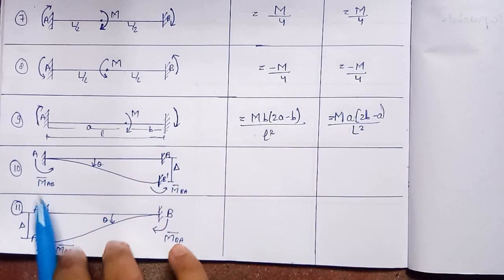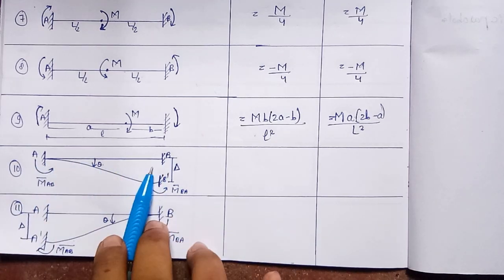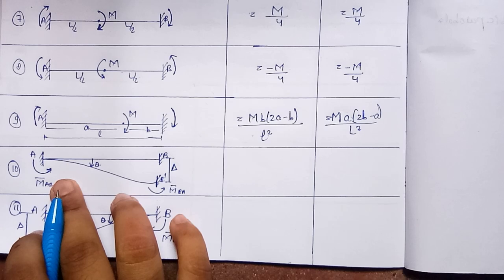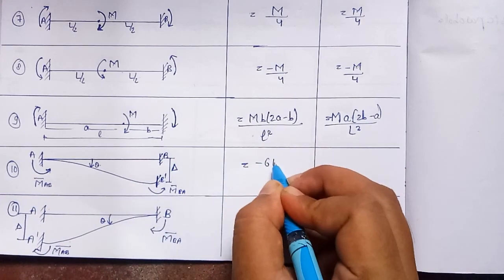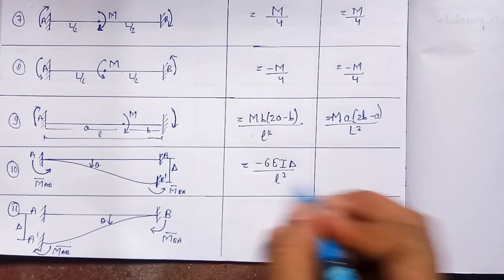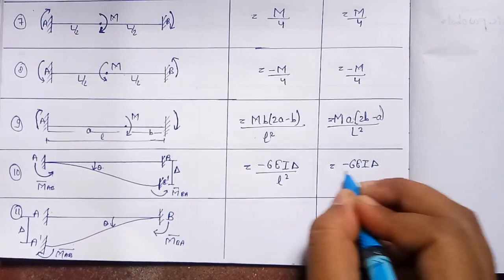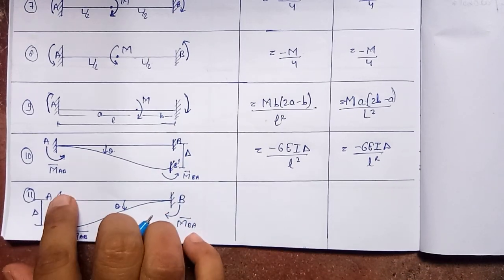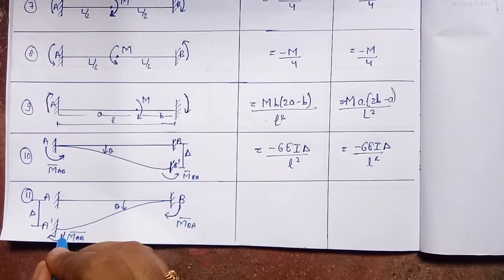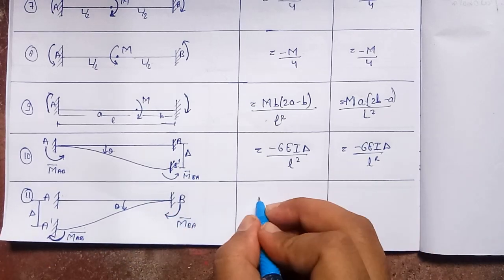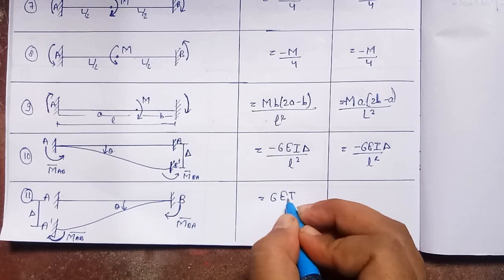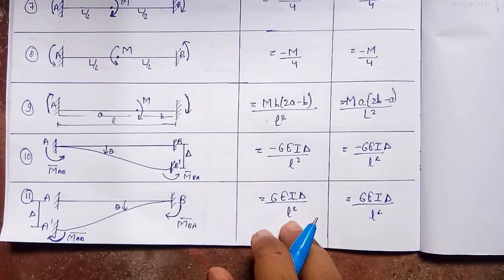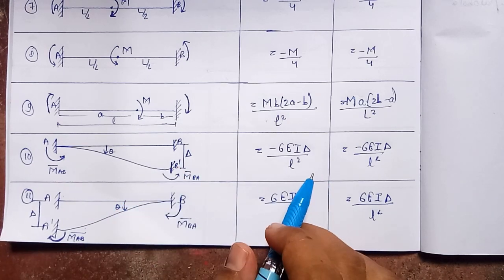The tenth and eleventh cases involve sinking (settlement) of a support. If joint B sinks by a displacement Δ, fixed end moments develop at both joints. When the support sinks downward, the moments at both A and B are clockwise (positive): M-bar_AB = +6EIΔ/L² and M-bar_BA = +6EIΔ/L². If instead the support settles upward, the moments are anti-clockwise (negative): −6EIΔ/L² at both joints. Clockwise = positive; anti-clockwise = negative.